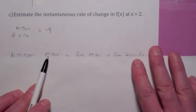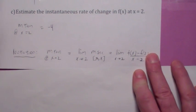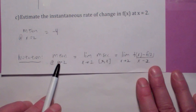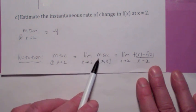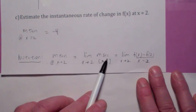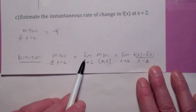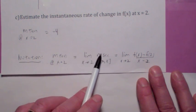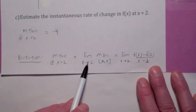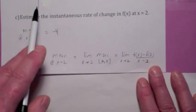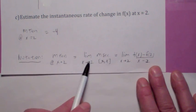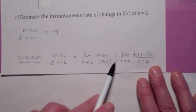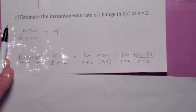Let's talk about notation. The slope of the tangent line at x equals 2 can be found by first computing the slope of the secant line from 2 to x, and then writing 'the limit as x goes to 2' — which means: what is this expression getting close to as x approaches 2 from both sides? This is written as the limit as x goes to 2 of the slope of the secant line from 2 to x.